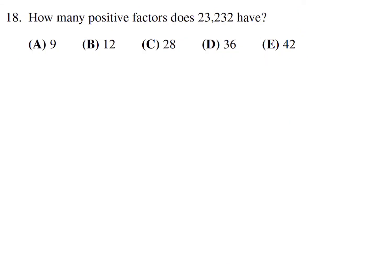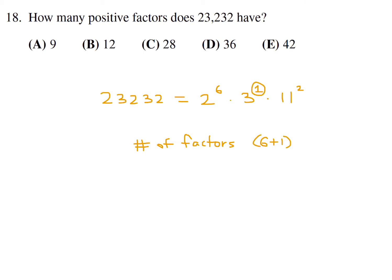How many positive factors does 23,232 have? Breaking it into prime factors: 23,232 = 2⁶ × 3¹ × 11². To find the number of factors, take each exponent, add 1, and multiply: (6+1)(1+1)(2+1) = 7 × 2 × 3 = 42. Number 18, the answer is E.